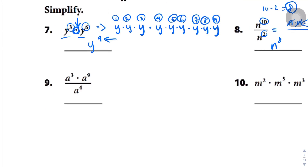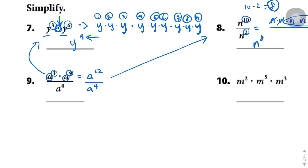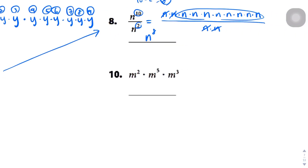Question 9: we have a fraction with a to the power of 3 times a to the power of 9 in the numerator and a to the power of 4 in the denominator. Do the numerator first — same base, so add 3 and 9 to get a to the power of 12. Then apply the division rule: 12 minus 4 gives a to the power of 8. Finally, question 10: m to the power of 2, times m to the power of 5, times m to the power of 3. All the same base, so add them: 2 plus 5 is 7, plus 3 is 10, giving m to the power of 10.